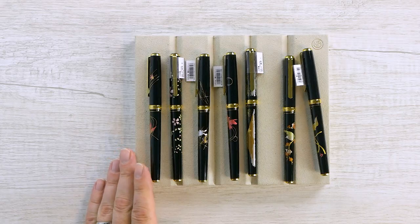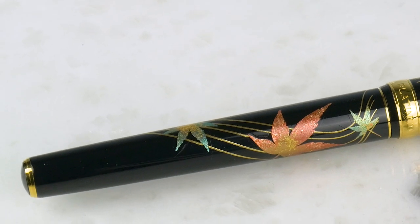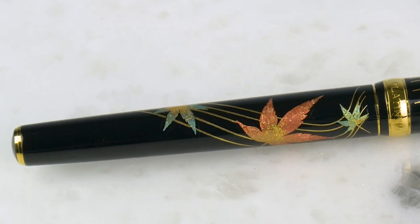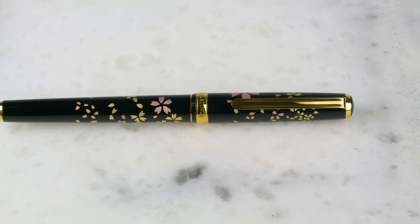So starting on the left, we have the one we're looking at, we have the autumn leaves. Followed by one of my personal favorites, the cherry blossom, Sakura. We've got the nice pink, some light green in there. Really nice, nice looking pen.